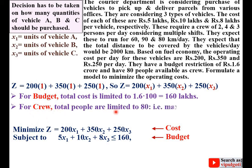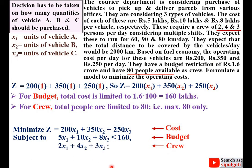For the crew, total people are limited to 80, as stated — 80 people are available as crew. So at maximum 80 people are available. These require a crew of 2, 4 and 3 persons per day for vehicles A, B and C respectively. So the crew constraint is: 2x1 + 4x2 + 3x3 ≤ 80.